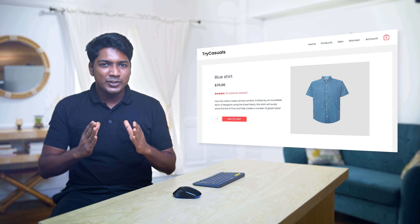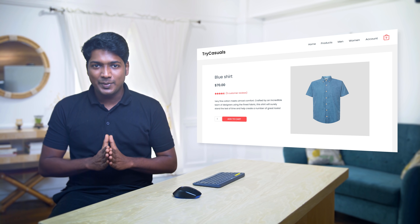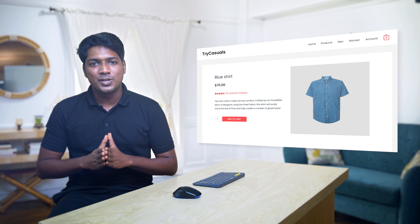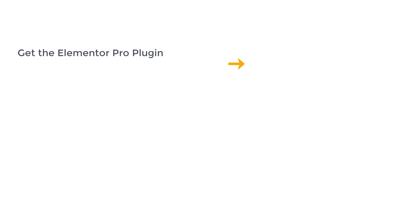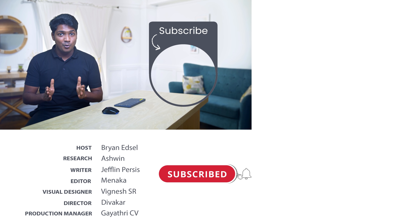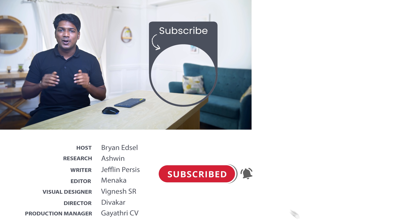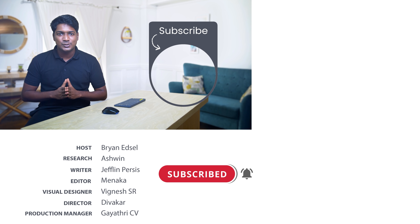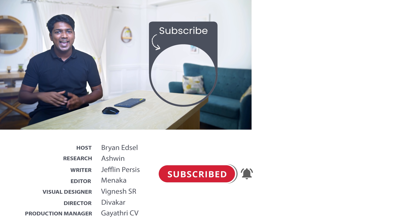So that's it guys. This is how you can create a custom product page using Elementor for your e-commerce website. Now to get the Elementor Pro plugin, just click here and start creating your custom product page. And if you want to know how to create a mobile app for your e-commerce website, you can watch this video. Also make sure you subscribe to Website Learners for more videos like this one. Thanks for watching. I'll see you in the next video. Take care. Bye bye.